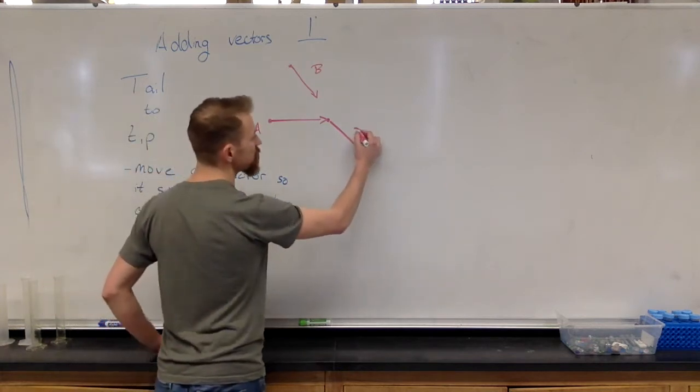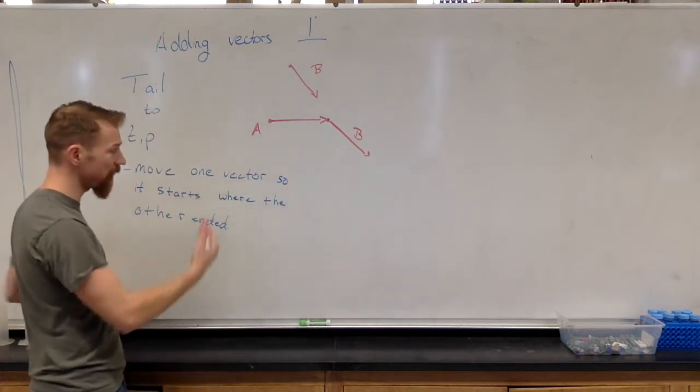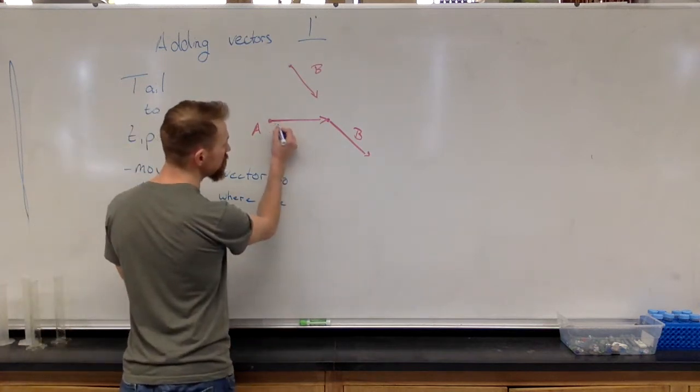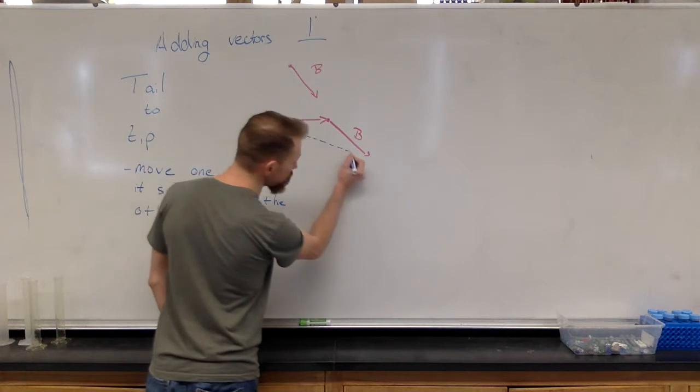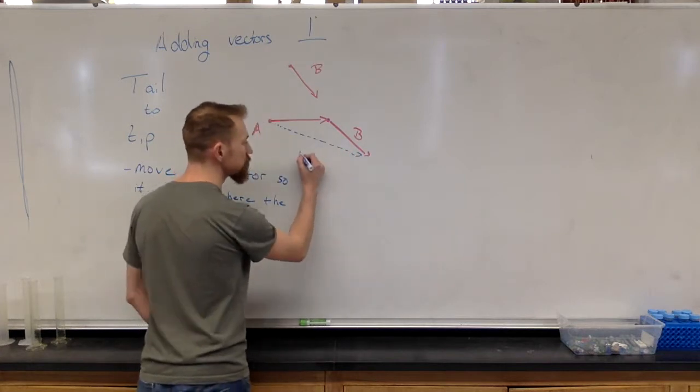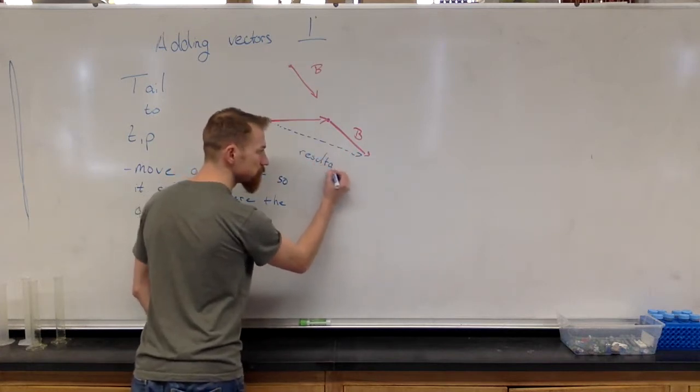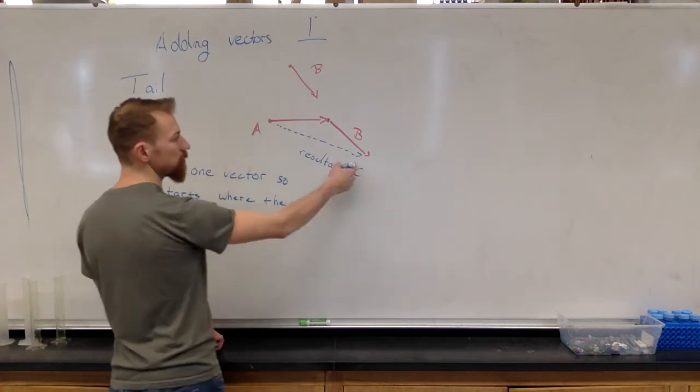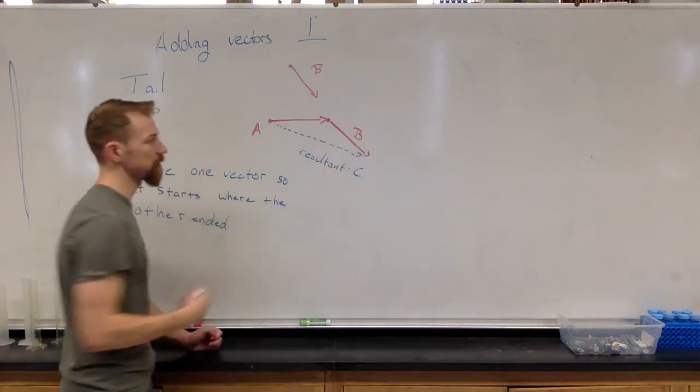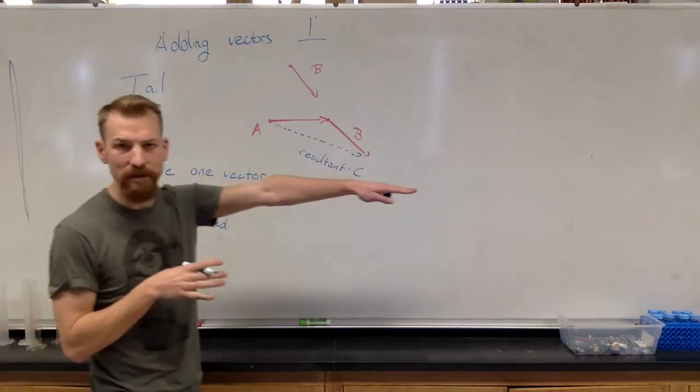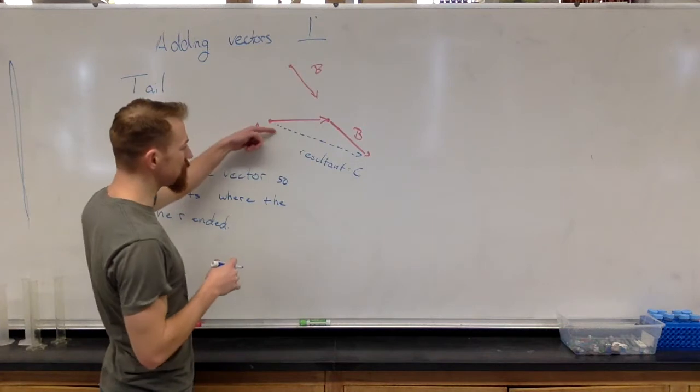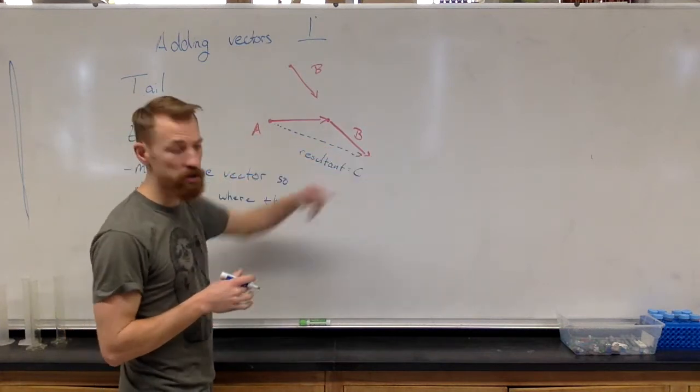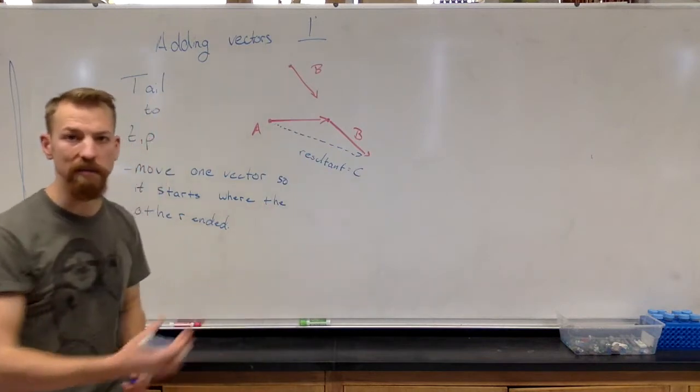So this is B. I tried to make it the same length. It would be easier if I had graph paper and we'll do that in just a bit. But for right now see that this vector, this is our resultant, we'll call it C. This is our resulting vector. So if I were on a plane going in this direction and the wind were blowing in this direction, this would be my actual course. I would be blown off course by that much considering that these are the two of the same kind of vectors.